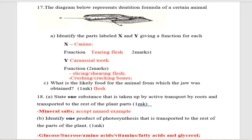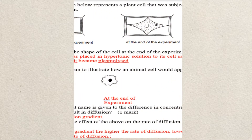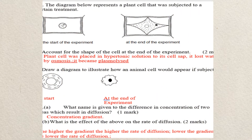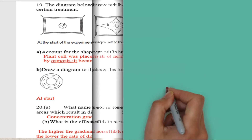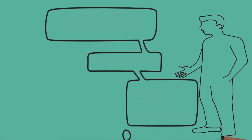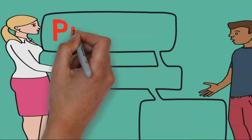Number nineteen: the diagram below represents a plant cell experiment, and I am going to deal with that question after a short break.